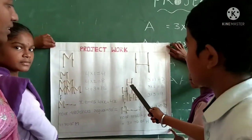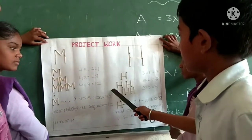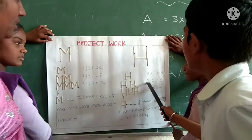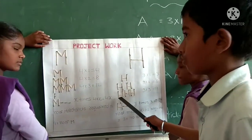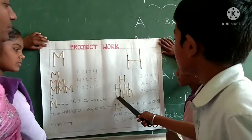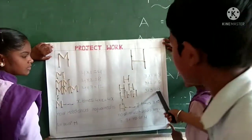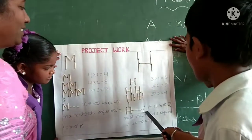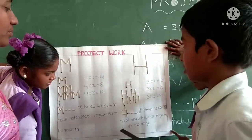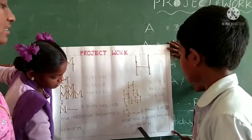For making 1 H, we need 3 matchsticks — 3 into 1 equals 3. For making 2 H's, we need 3 into 2, equal to 6. For making 3 H's, we need 3 into 3, equal to 9. H times Y equals 3 into Y, which is equal to 3Y. The number of matchsticks required is equal to 3 into the number of H.